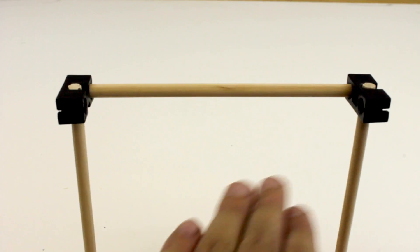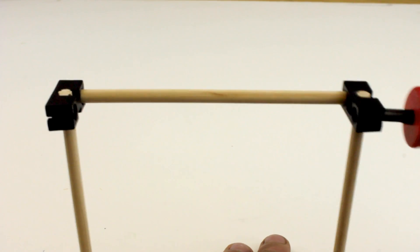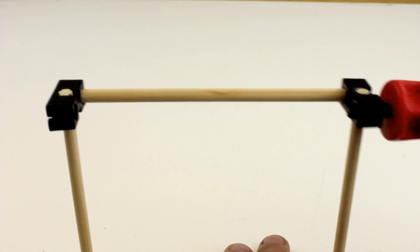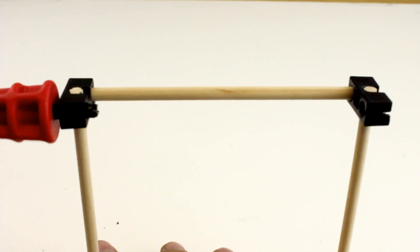Using your TeacherGeek reamer, clean out the other holes of the perpendicular block. To use the reamer, just twist it back and forth until it goes all the way through, then give it some full turns to clean out the rest of the hole.